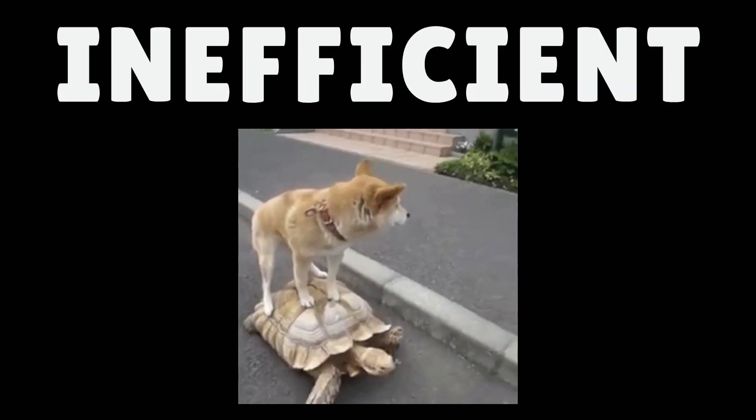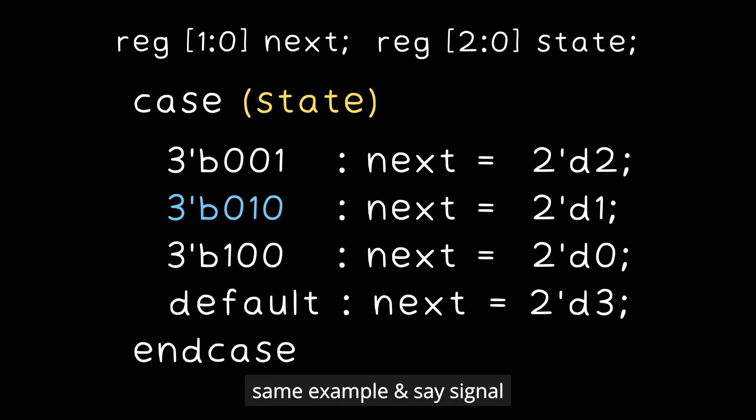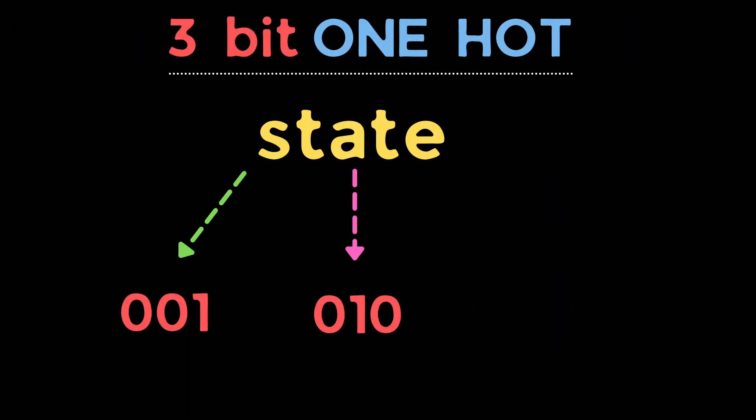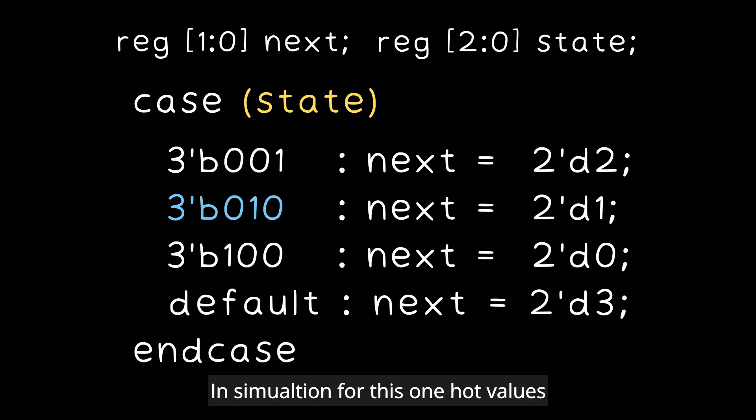But this coding style is very inefficient when used for one hot state machine. To understand this, let's take the same example and say the signal state is one hot encoded. So the state will have 001, 010, and 100 values. In simulation for these one hot values, the case statement will behave the same way as earlier.